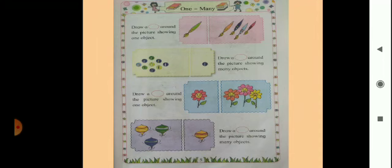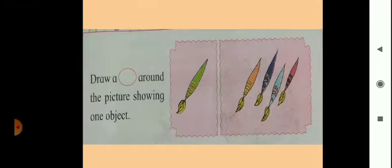This is the textbook page and here are four examples of one and many. We will see them one by one. Now here are brushes.